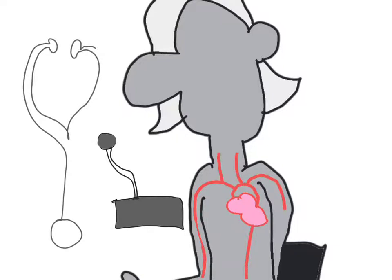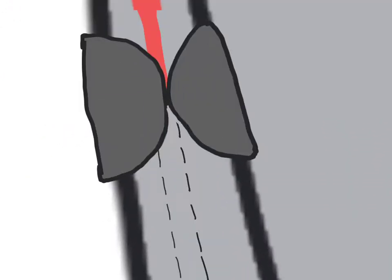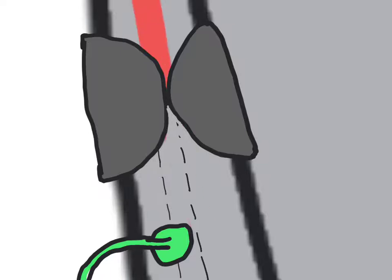First, the sphigmomanometer will be inflated to block off the flow of blood through the brachial artery. At this point, placing the stethoscope downstream will yield no sound because no blood will be flowing past the blockage point.